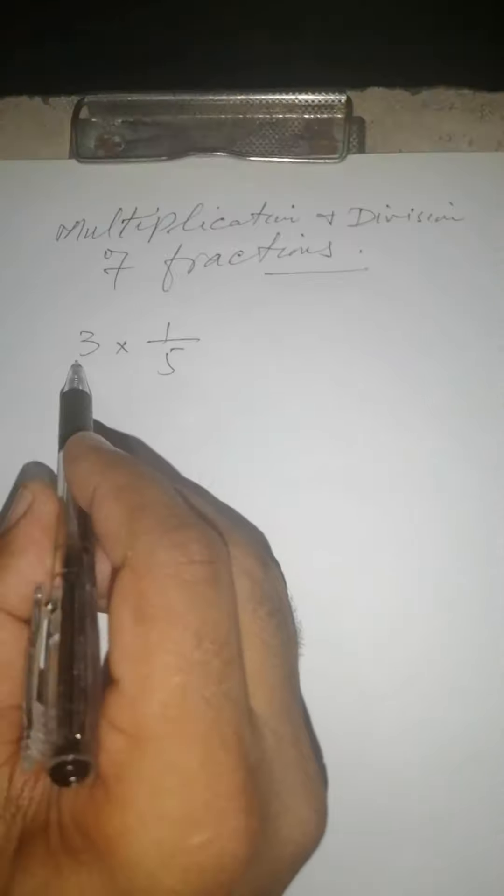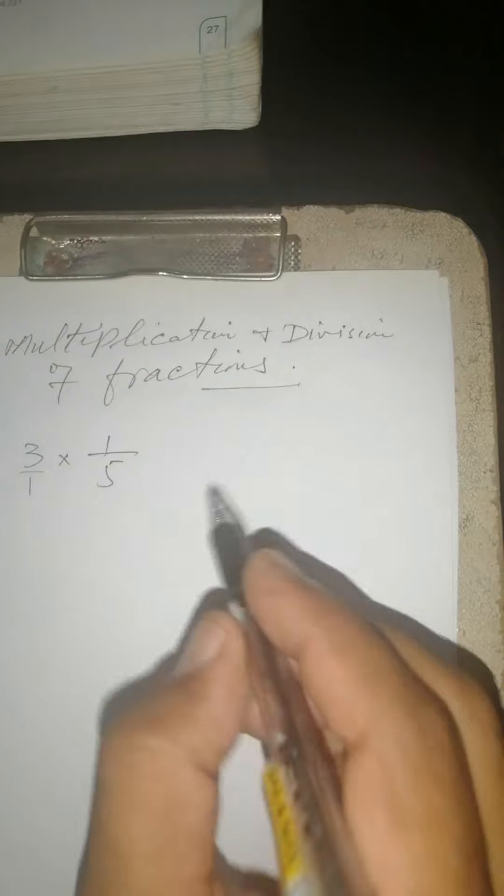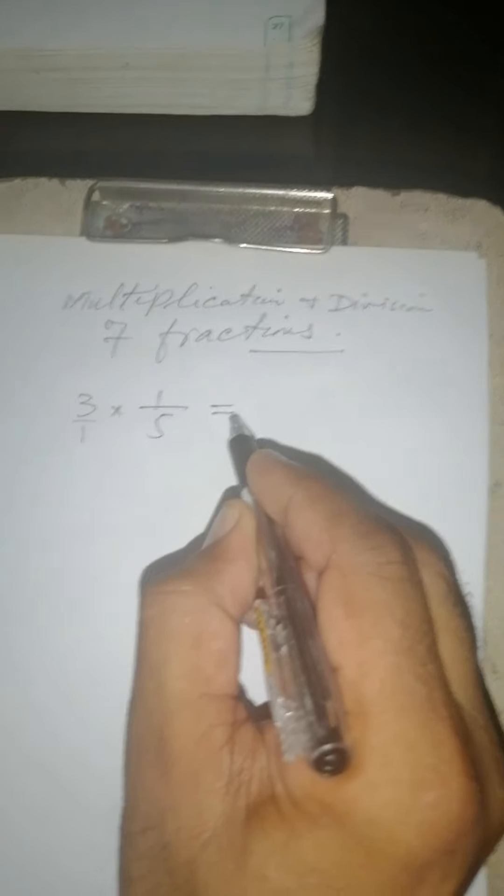Just I explain few examples. For example, 3 multiplied by 1 over 5. This 3 means it's also a fraction 3 divided by 1. So for multiplication, this is very easy. Numerator will multiply with numerator. So 3 times 1 is 3 and divided by 5 times 1 is 5. This is very simple.